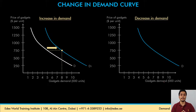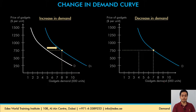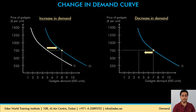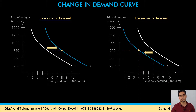In the same way, we can understand decrease in demand. If the consumer is currently consuming 7000 gadgets per year at $750, and the government increases the income tax rate — reducing disposable income — at the same price of $750, consumers will only be willing to buy 4000 gadgets. At each price level, consumers buy fewer gadgets, giving us a new demand curve to the left of the existing one — that is a decrease in demand, caused by changes in factors other than price.